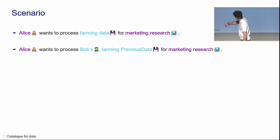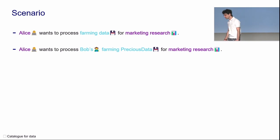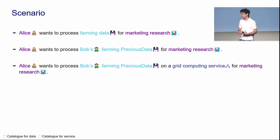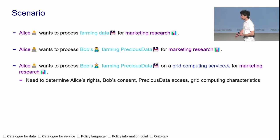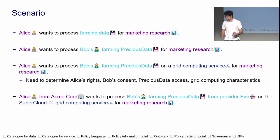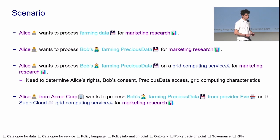At the bottom of the slides I'm putting a small checkbox. To find Bob's farming precious data, we need to have a catalog for data. The data is not going to be processed on Alice's laptop — that's not possible. Alice also needs to find grid computing services to process the data. We can ask many more questions: Where is Alice coming from? Did Bob grant consent? Is there any access right conditions? What are the grid computing service characteristics? The full scenario: Alice from Acme wants to process Bob's farming precious data provided by Eve on the Super Cloud grid computing services for marketing research. That's our scenario for the next 40 minutes.